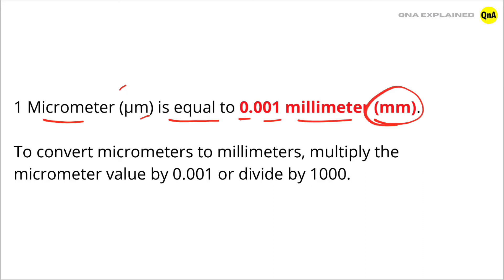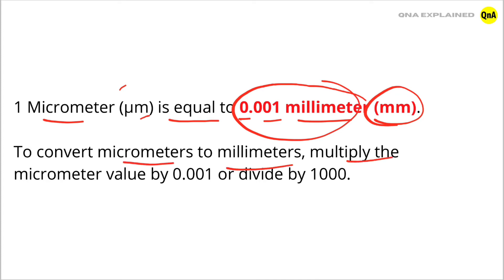So 1 micrometer is known as 1 micron, meaning 1 micron is equal to 0.001 millimeter. To convert micrometers to millimeters, multiply the micrometer value by 0.001, or divide by 1000.